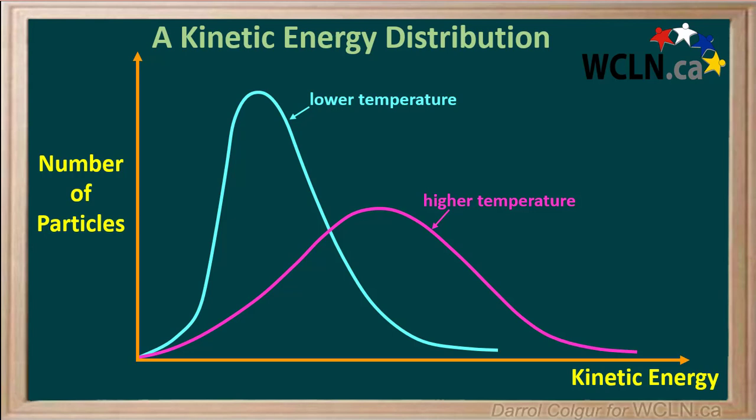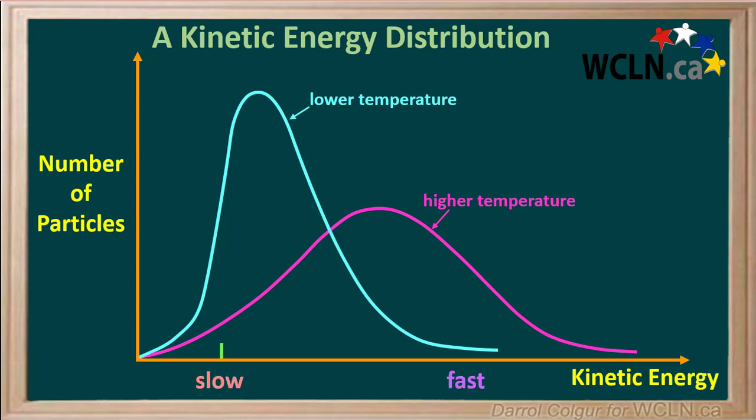Here we'll look at the low temperature and high temperature curves on the same graph and compare them. Notice that both curves start at the origin. This is because at both temperatures, all of the particles are moving — there are zero particles with zero kinetic energy. If we consider lower kinetic energies or slower speeds, we see that at the higher temperature, there are fewer slow particles.